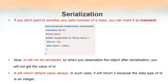Now suppose we do not want a particular member to be serialized. If we do not want a certain member to be serialized, we have to use the keyword transient to declare it. In this example we have a variable named id declared using the keyword transient. Since it is declared as transient, when we create an object of this class and try to serialize that object, this variable will not get serialized.